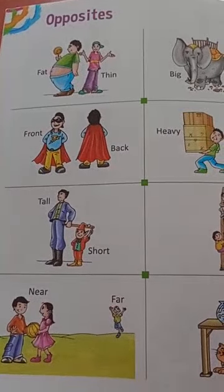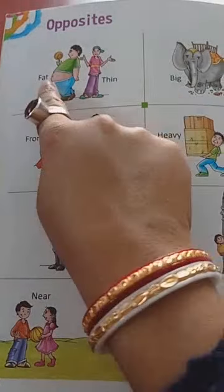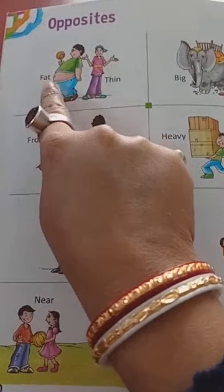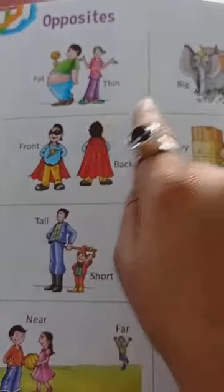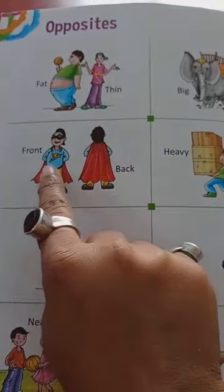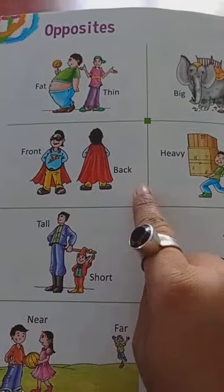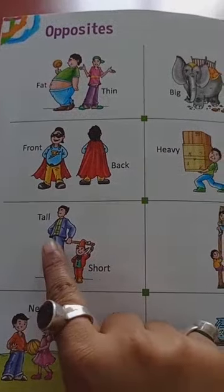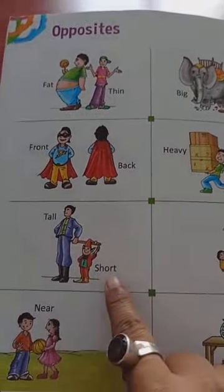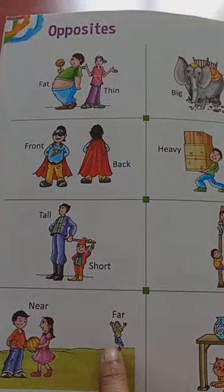What are these opposite words? First one: fat, thin. Front, back. Tall, short. Near, far.